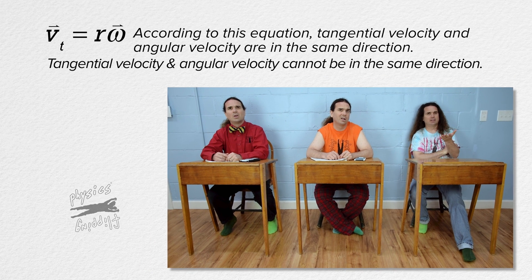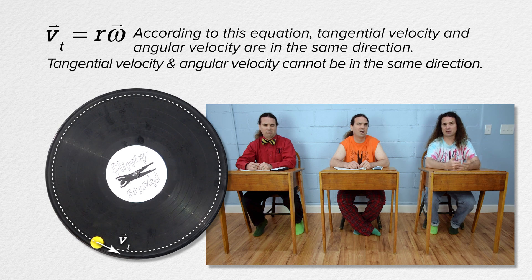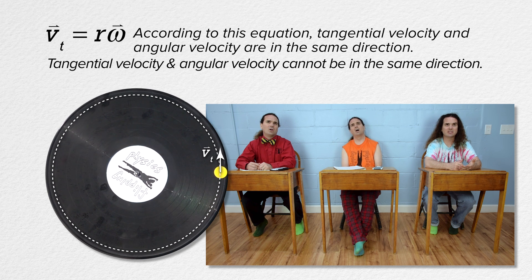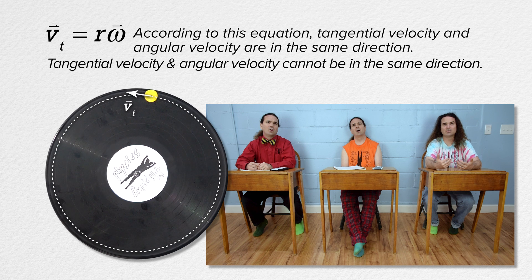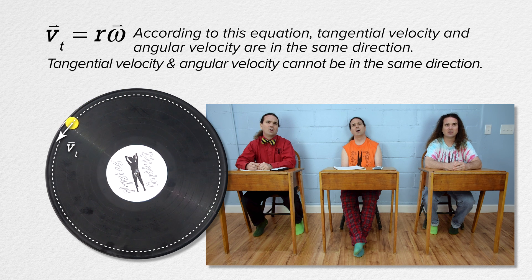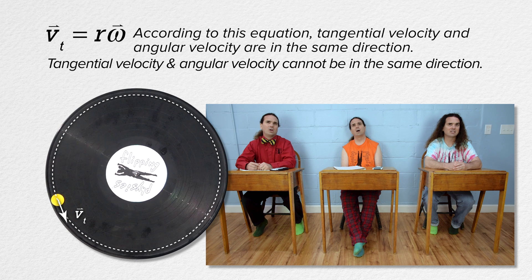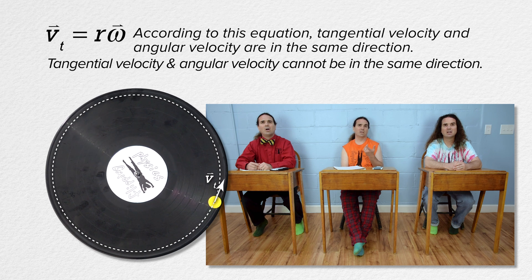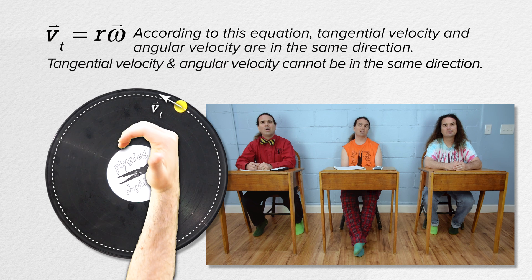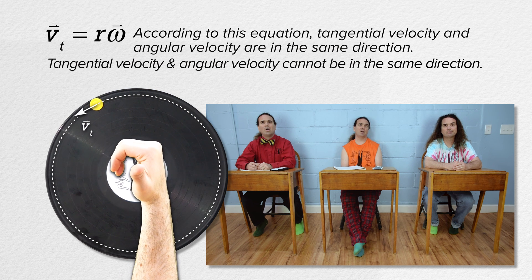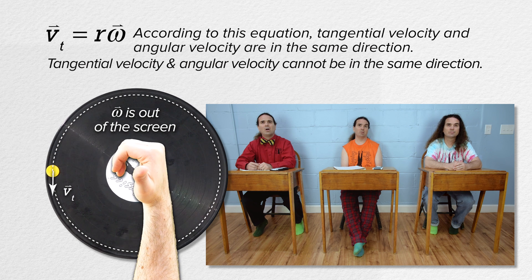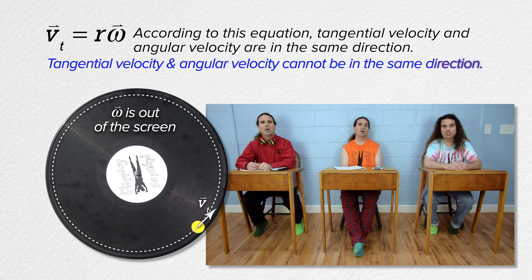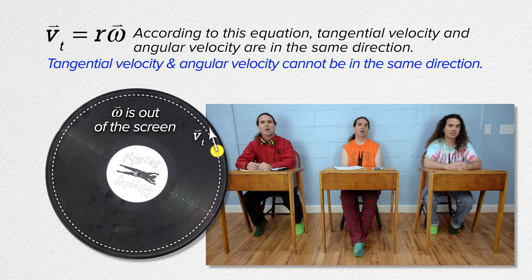The tangential velocity and angular velocity of an object can never be in the same direction. Why not? Well, take this yellow object moving in a circle on a record, for example. You can see the direction of the tangential velocity is always tangent to the circle it's moving along. And while the direction of the tangential velocity is always changing, it is always in the plane of the circle. We can tell from the right-hand rule that the direction of the angular velocity is directed out away from and normal to the plane of the record. Therefore, the direction of the tangential velocity and the angular velocity of an object will never be the same.